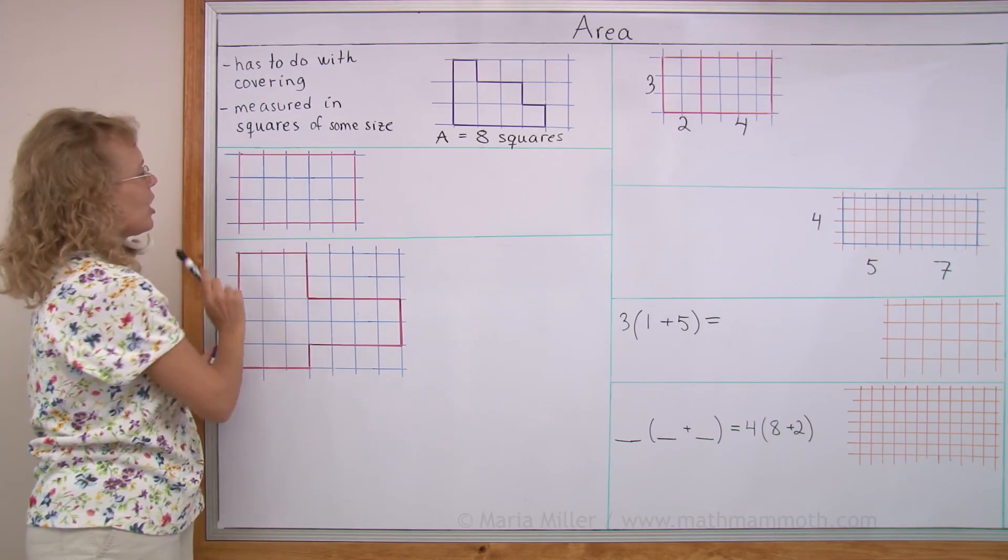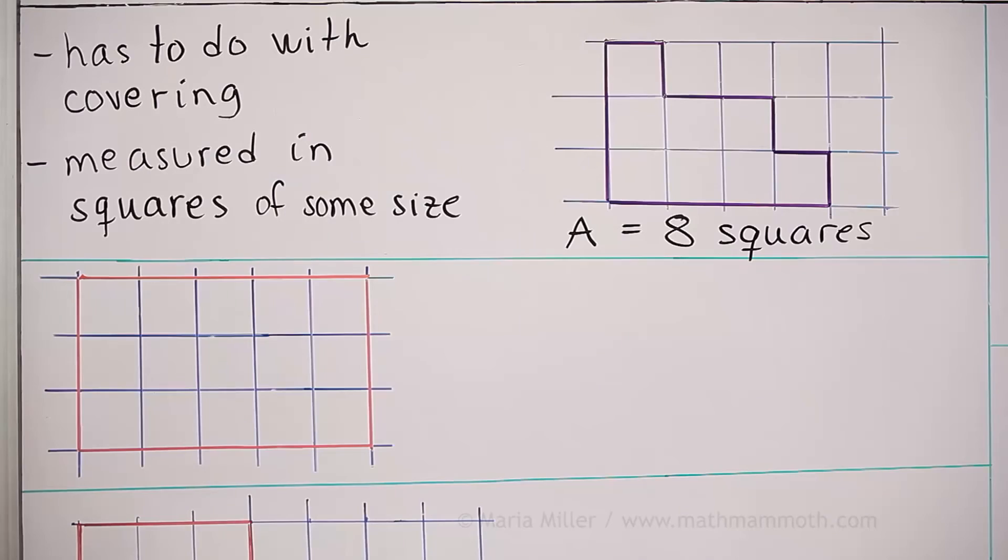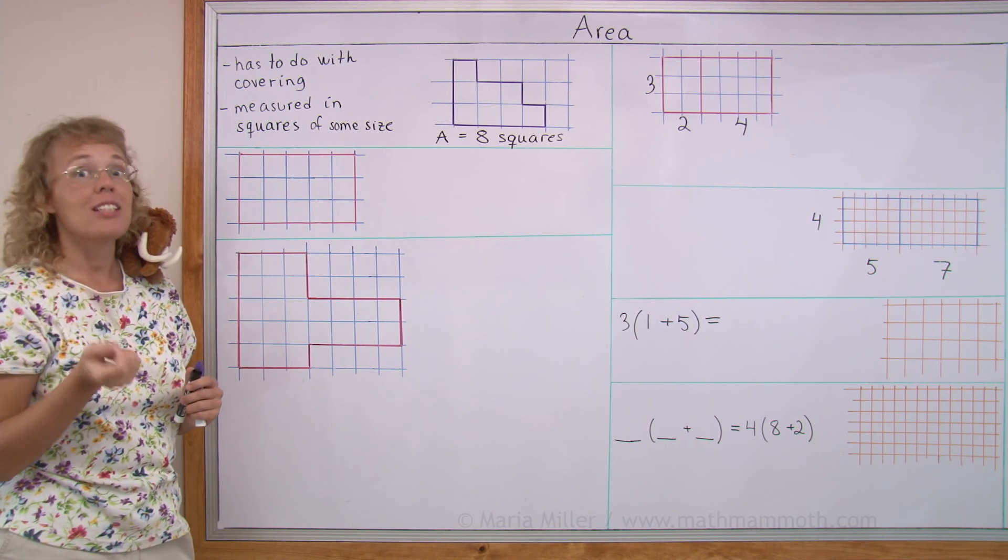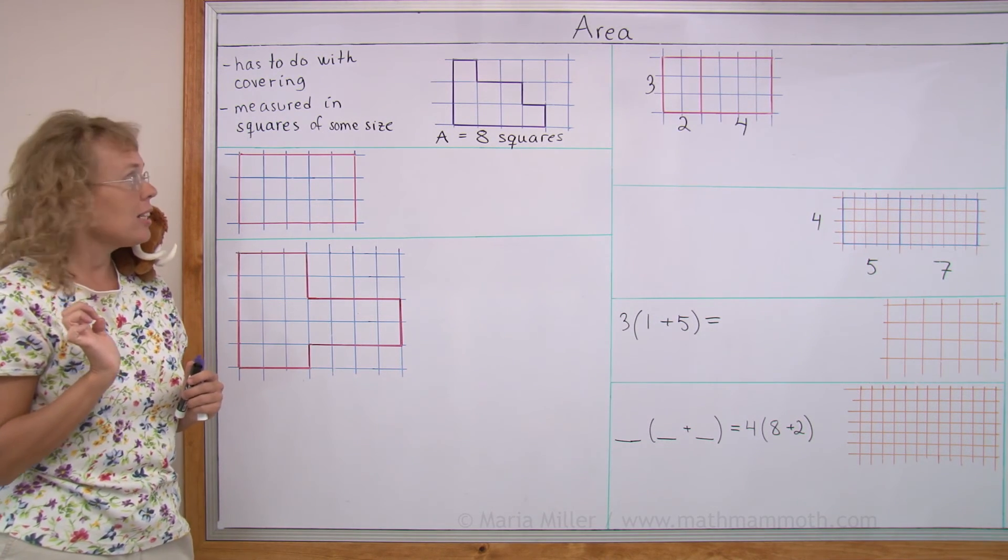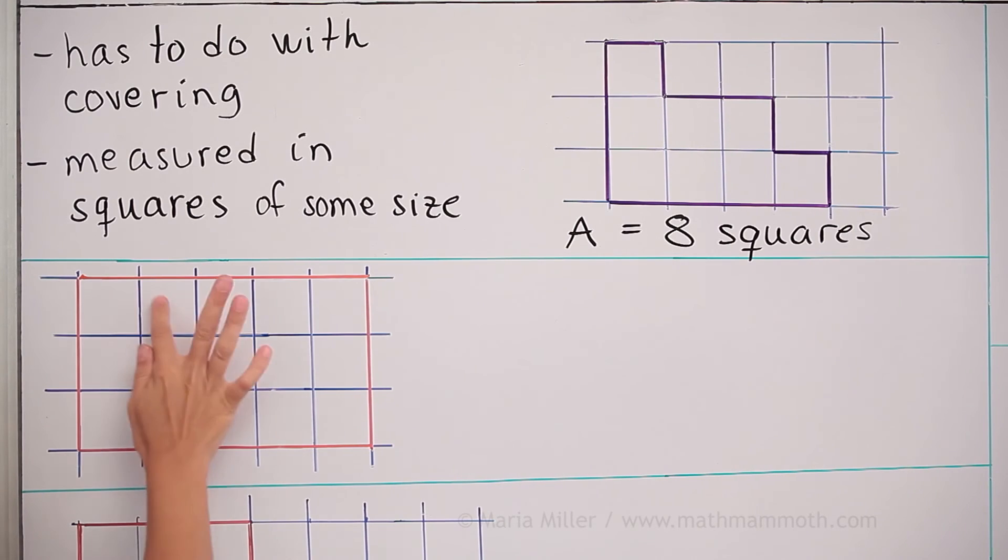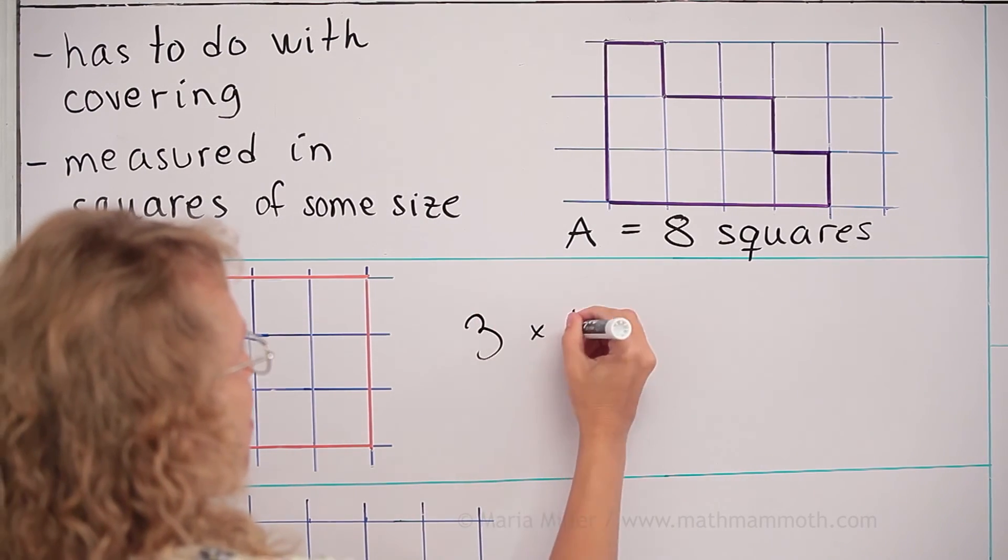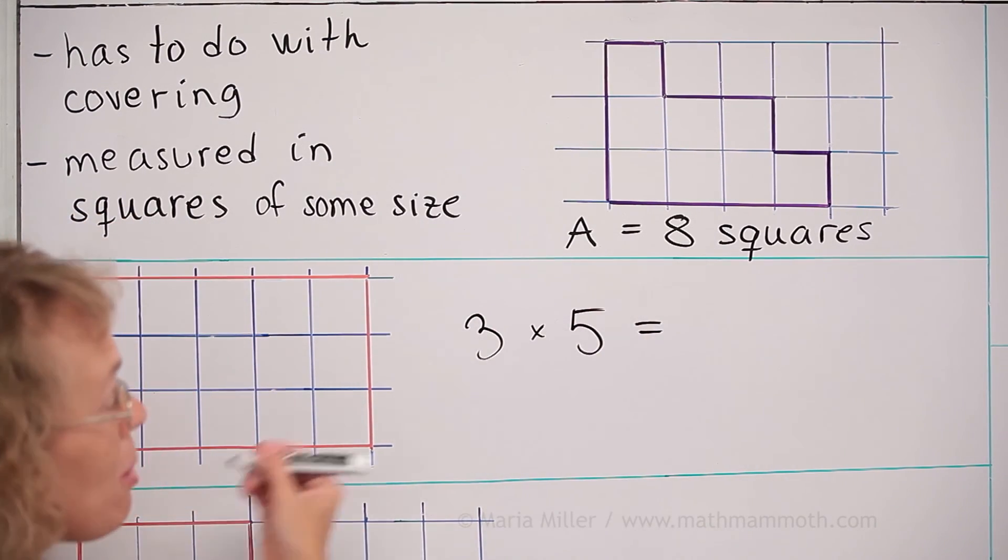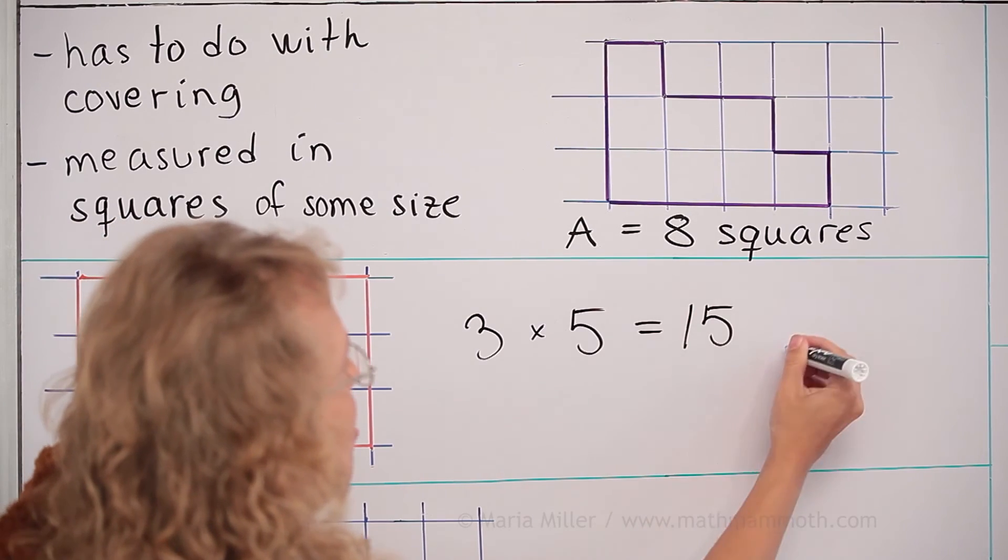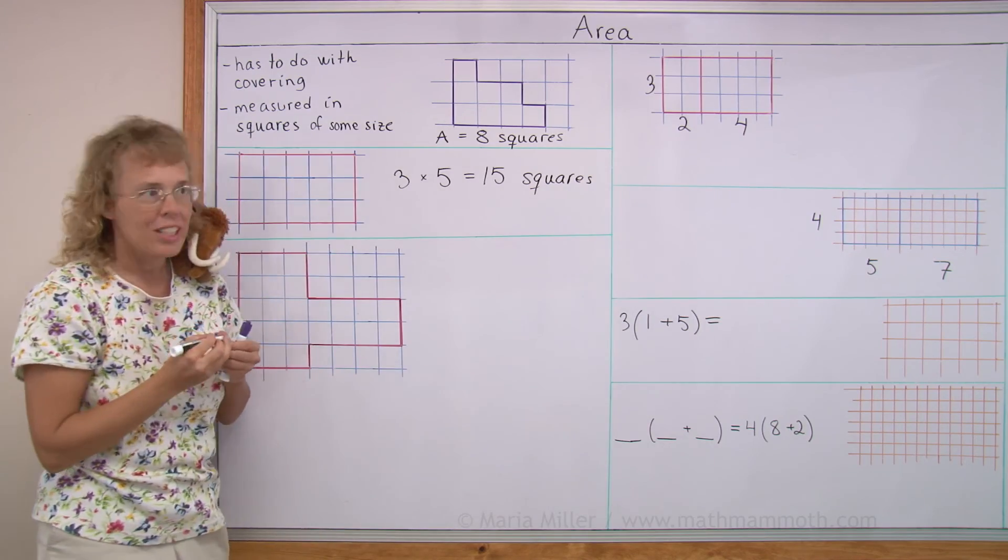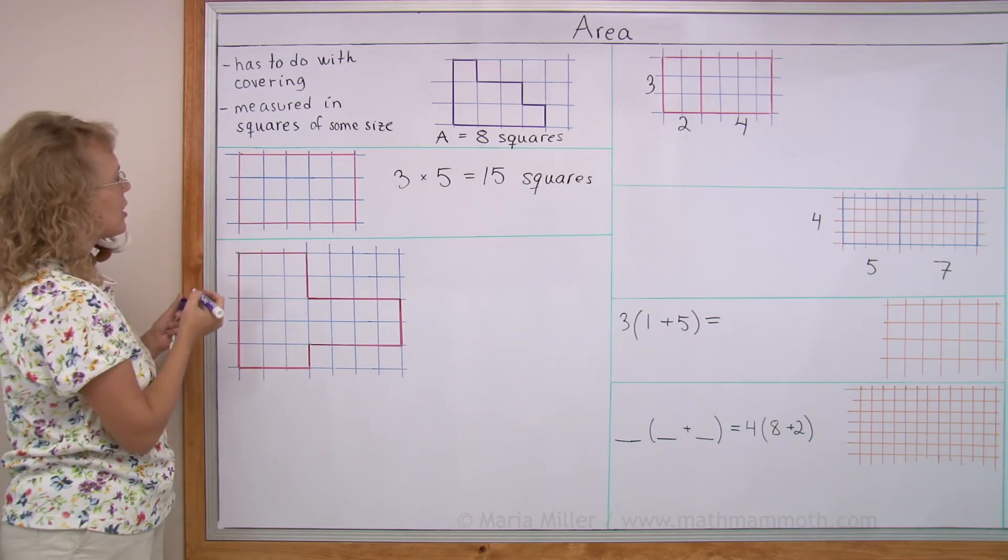How about this shape? It's a rectangle. So it's pretty easy. We could just count those squares inside it. But I also want you to write a multiplication for it. Right? There are basically 5 here, 5 here and 5 here. Or 3 times 5. So I can find the area by multiplying. I get 15 squares or square units. Let's look at this again.